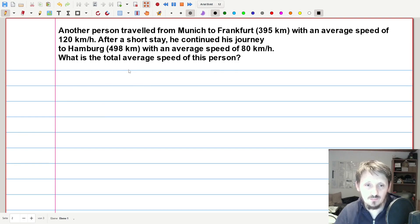So this is a little bit more complicated, but you will see that it's actually the same principle. We want to calculate the average speed, also in this case, but the formula which we have to use is a little bit different, and it is also a very important formula which you should remember. So here, the text says, another person traveled from Munich to Frankfurt, and this distance is 395 kilometers, and the average speed during this driving is 120 kilometer per hour. And then the person stays there in Frankfurt for a short period of time, so short that you can actually neglect the timing there. And then he continues his journey from Frankfurt to Hamburg, and this is again a distance of 498 kilometers, and the average speed here is 80 kilometer per hour. And now, what we want to calculate is the total average speed which the person had from Munich to Hamburg.